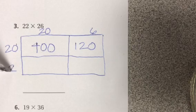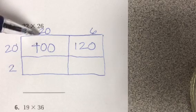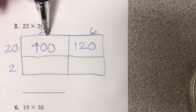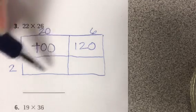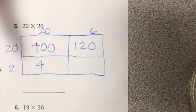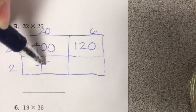Now I'm going to do 2 times 20. If I cover up this zero I have a base fact of 2 times 2 which is 4. I need to make sure I put that 0 back on.